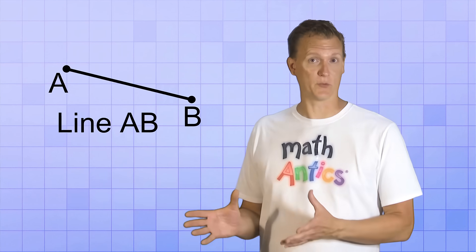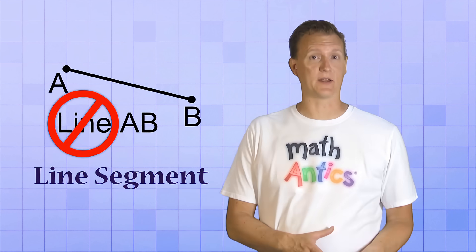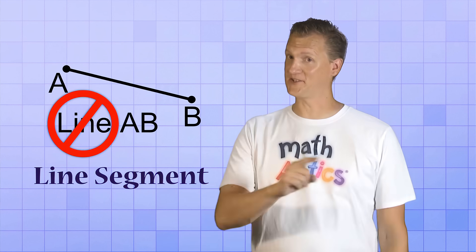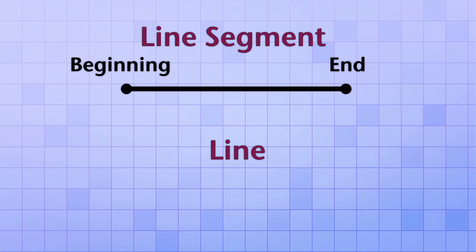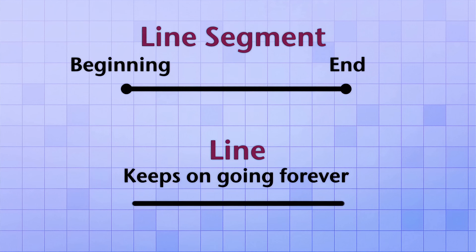But technically, this isn't really a line. It's a line segment. What's the difference, you ask? That's a good question. A line segment has a beginning and an end. It starts at one point in space and it ends at another. A line, on the other hand, just keeps on going in either direction forever, just like the number line keeps on going forever.